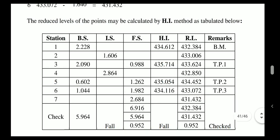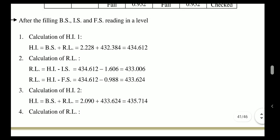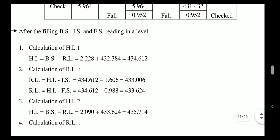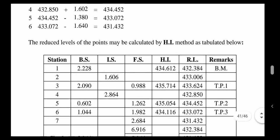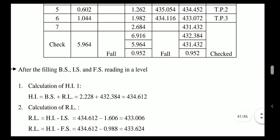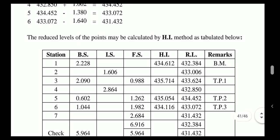Now I will solve the same question using the Height of Instrument method. To find the height of instrument, we take the first back sight reading and add it to the benchmark RL. So 432.384 + 2.228 = 434.612, which is the height of instrument. To find the RL of station 2, we subtract the intermediate sight: 434.612 minus 1.606 = 433.006. This is noted down.